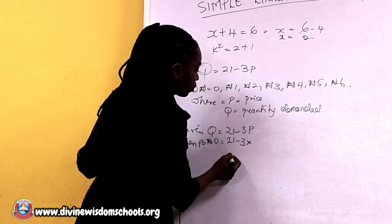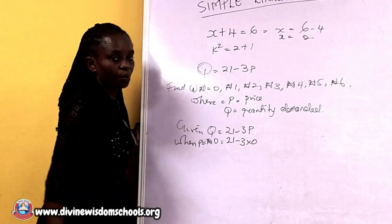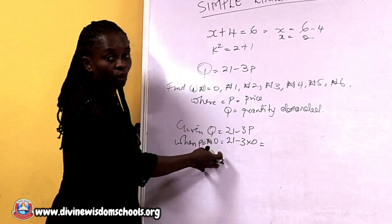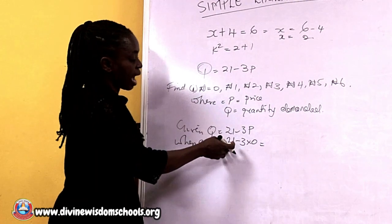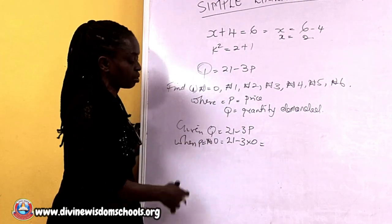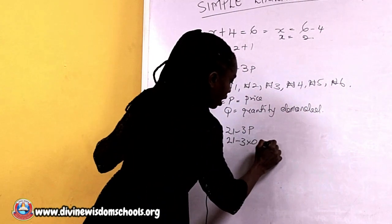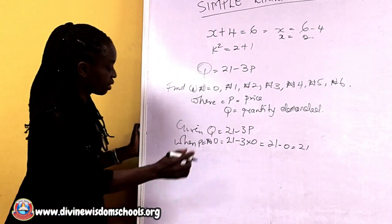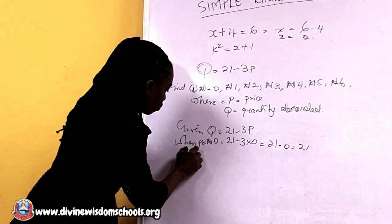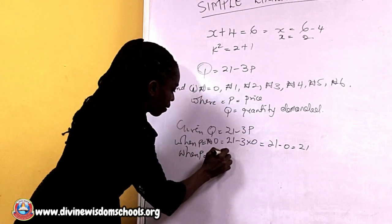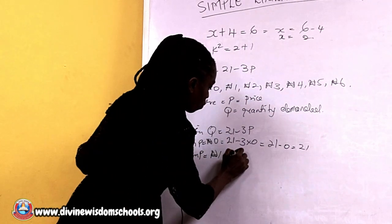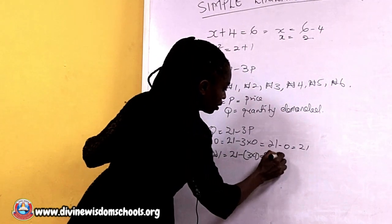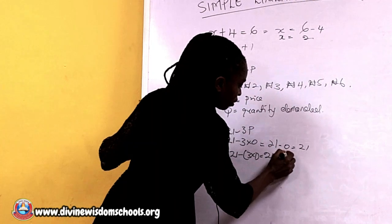So you have Q equals 21 minus 3 times 0, which gives 21. In the second instance, when the price increases to one naira, you have 21 minus 3 times 1. Three times 1 gives 3, so Q equals 21 minus 3, which equals 18.